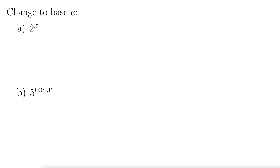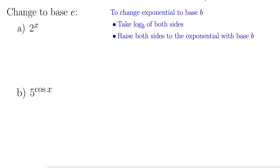In this example, we want to change 2 to the x to a similar exponential expression, but with base e. There's a technique for doing this. Anytime you want to change the base to base b, you take log base b of both sides, and then raise both sides back again with b as the base to whatever exponentials you have.